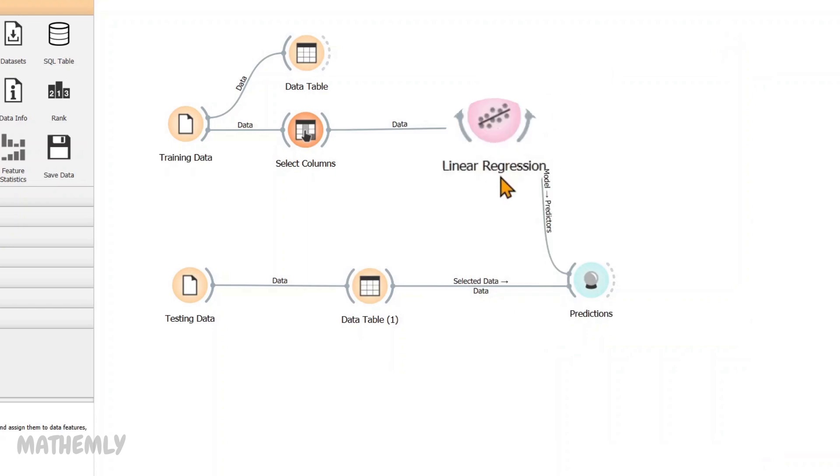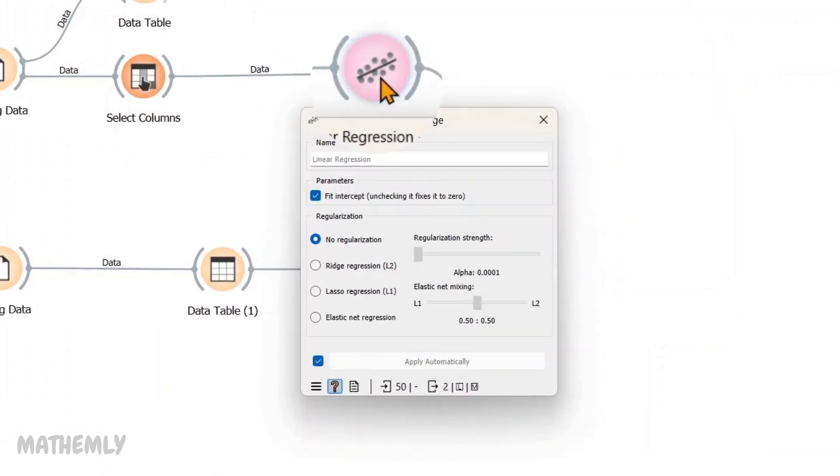Now, I have added the Linear Regression widget to train the model. This widget works by learning the relationship between years experience and salary from the dataset. It calculates the best fitting straight line to represent this relationship. For example, the model identifies that as years experience increases, the salary also increases at a specific rate, represented by the slope of the line. This relationship allows us to predict salaries for unseen data.